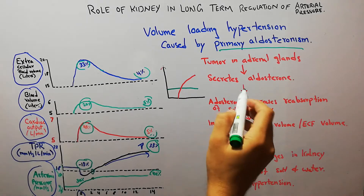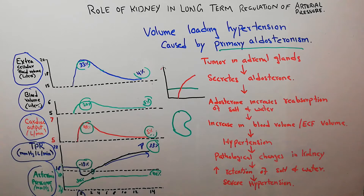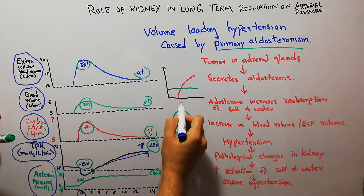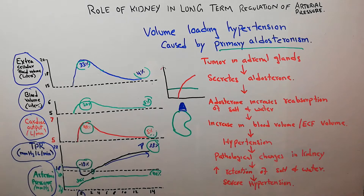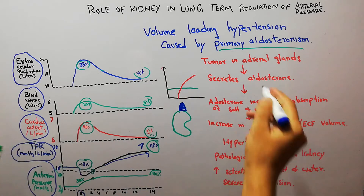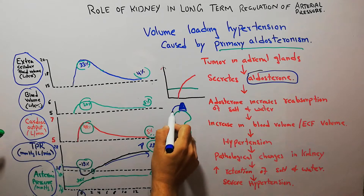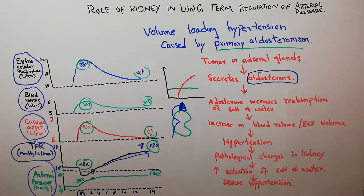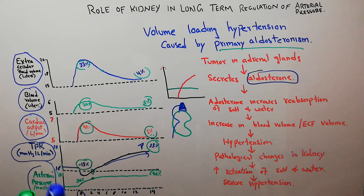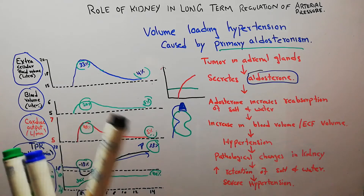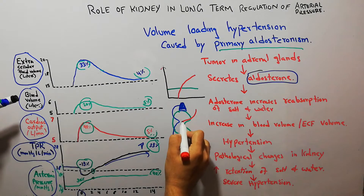Aldosterone is a hormone secreted from the adrenal gland, which sits on top of the kidney. The purpose of aldosterone is to reabsorb salt and water from the filtrate. Blood comes to the glomeruli, where it gets filtered.